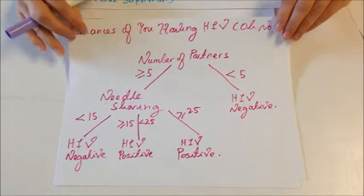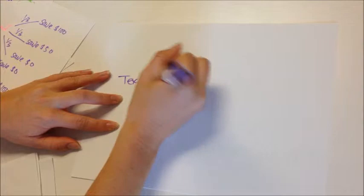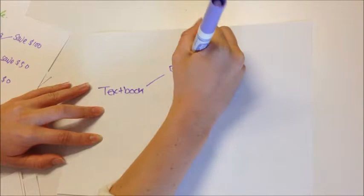So this real life example is of what the CU bookstore gives out to students deciding whether or not they should buy or sell their textbook or they should rent it. So, we are first going to start with textbook. So there are two options here. You can buy and then resell your textbook or you can rent out your textbook.